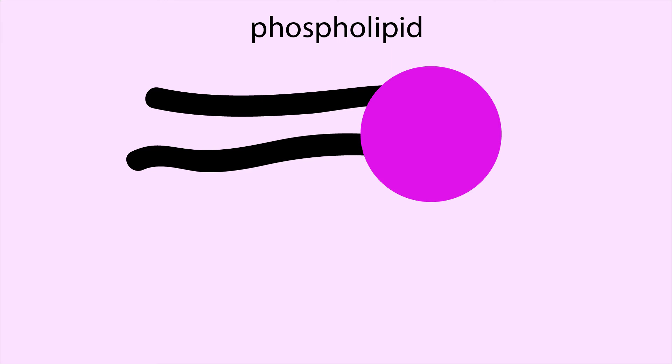Membranes consist of phospholipids with hydrophilic heads and hydrophobic tails. The exact nature of the head and tail groups can control various properties of the membrane.